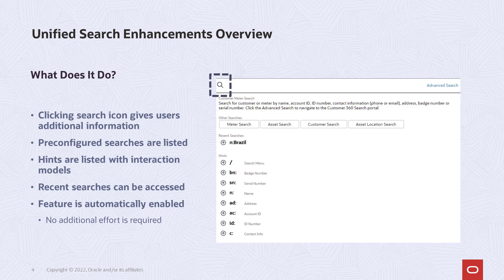For the relevant search, the hints that have been configured are displayed. You can pass the search to the unified search field directly using the provided arrow to transfer the search. The capability also tracks several past searches for possible reuse.